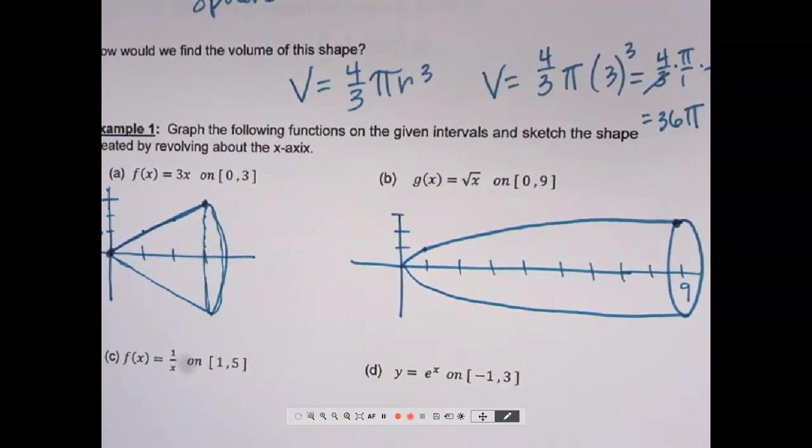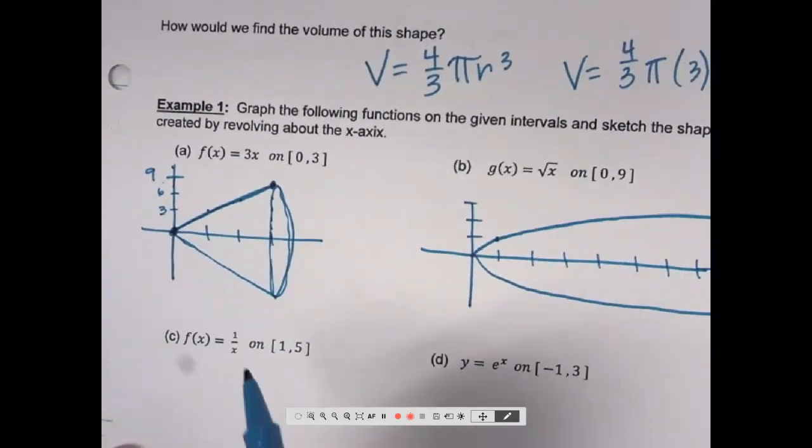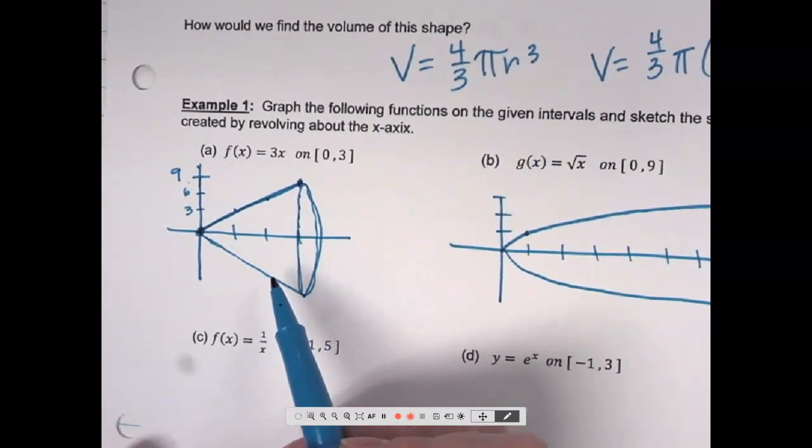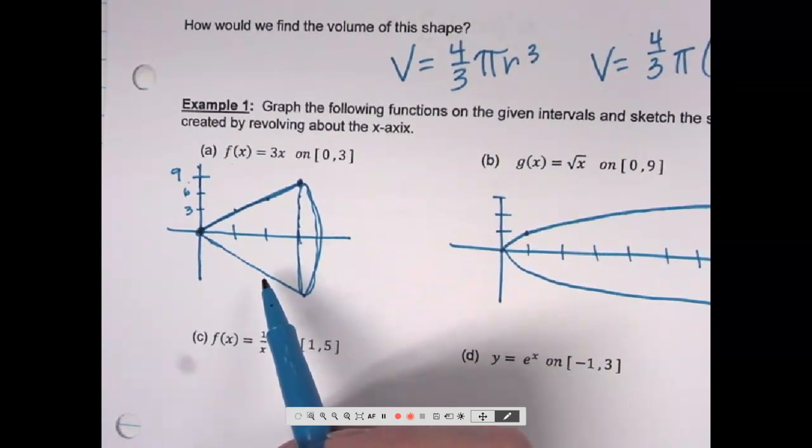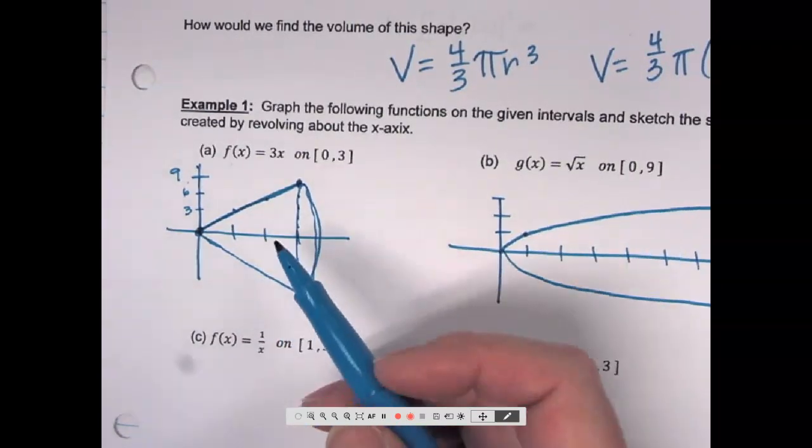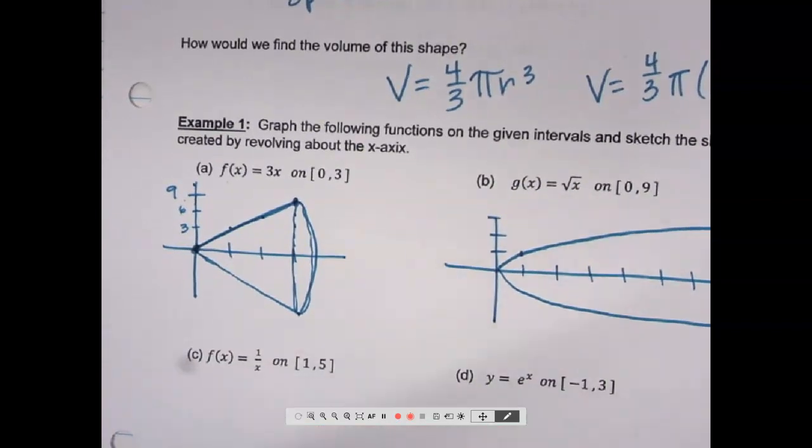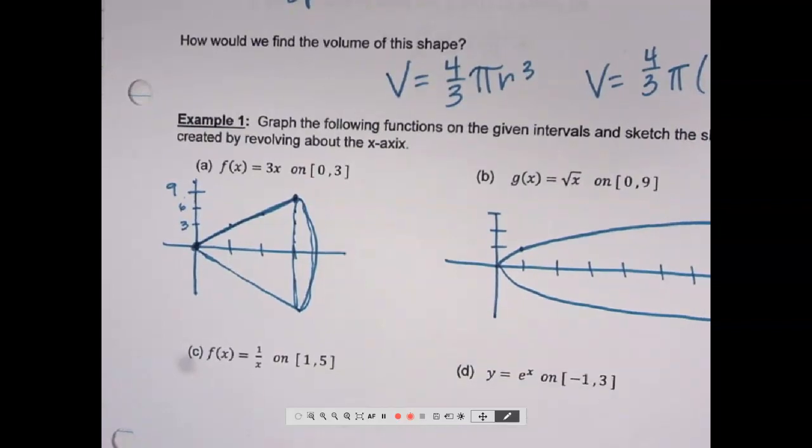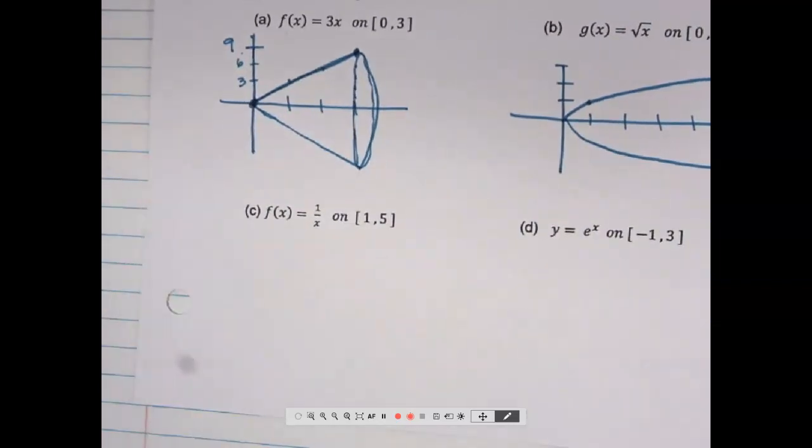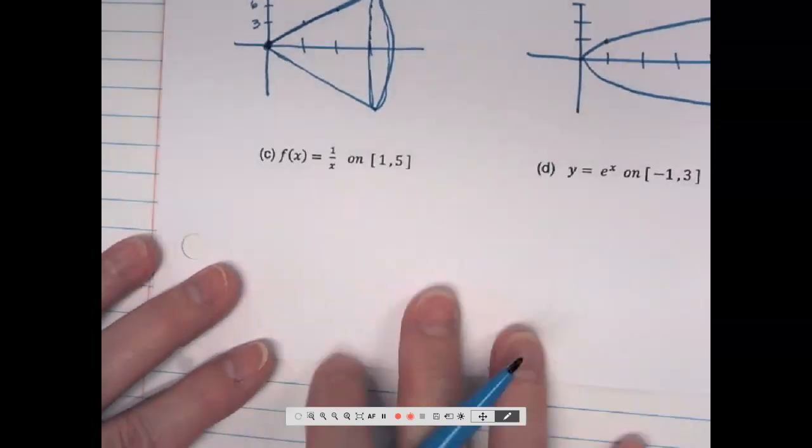Now, for a cone, we would have a geometric formula. 1 third pi r squared h, I think, is the formula for a cone. I might actually have to look that up to be sure, but we have a geometric formula. For this, like, tip of a bullet, we don't have a geometric formula for that. So guess what we're going to use to find the volume of it? Calculus. Just like we did for that area of shapes we didn't know, we can use it for volume of shapes we don't know.